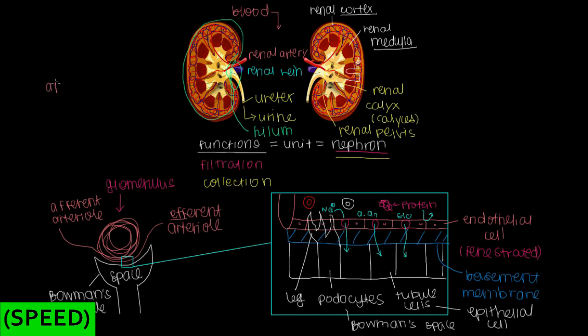Let's make a table to think about this. What would happen if we look at our afferent and efferent arterioles, and we change the diameter of the vessel? What does that do to the rate of filtration? How does the diameter of our vessels change the rate of filtration?